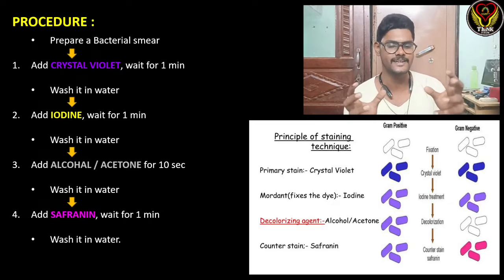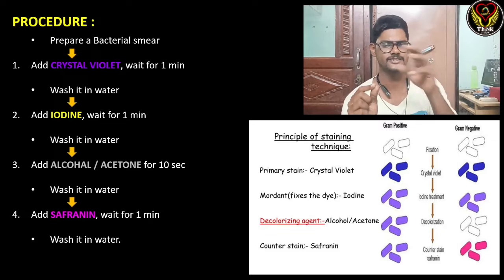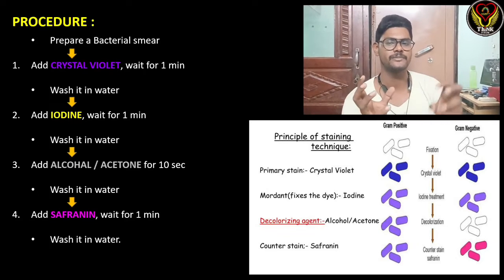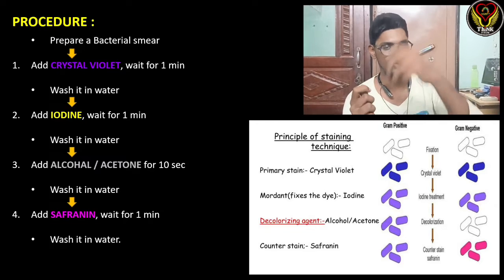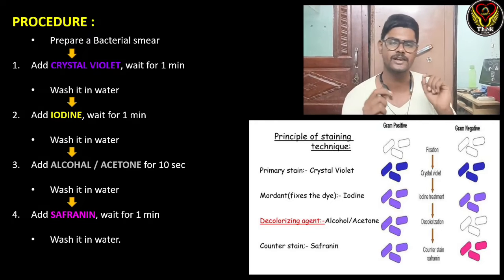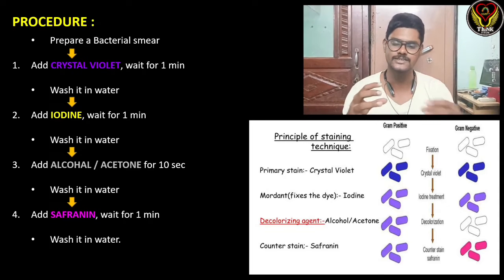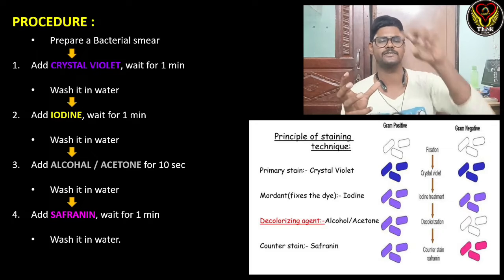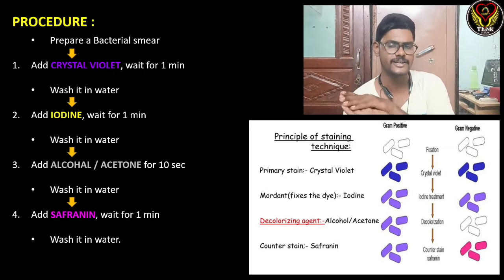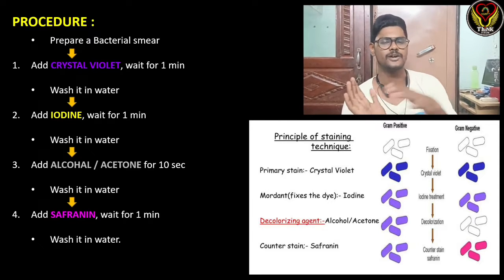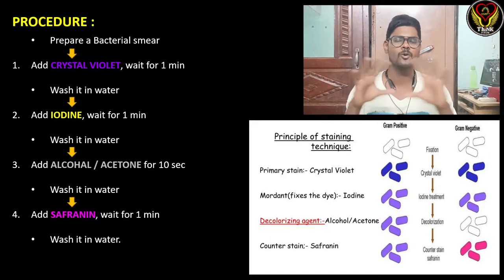The third step is the most crucial and important step — adding alcohol or acetone, which is the decolorizer, for just 10 seconds. This removes the primary stain from gram negative bacteria. Then we wash with water. The fourth step is to add safranin, our counter stain, and wait for one minute, then wash with water. Gram positive bacteria will appear blue or violet and gram negative bacteria will appear pink or red.